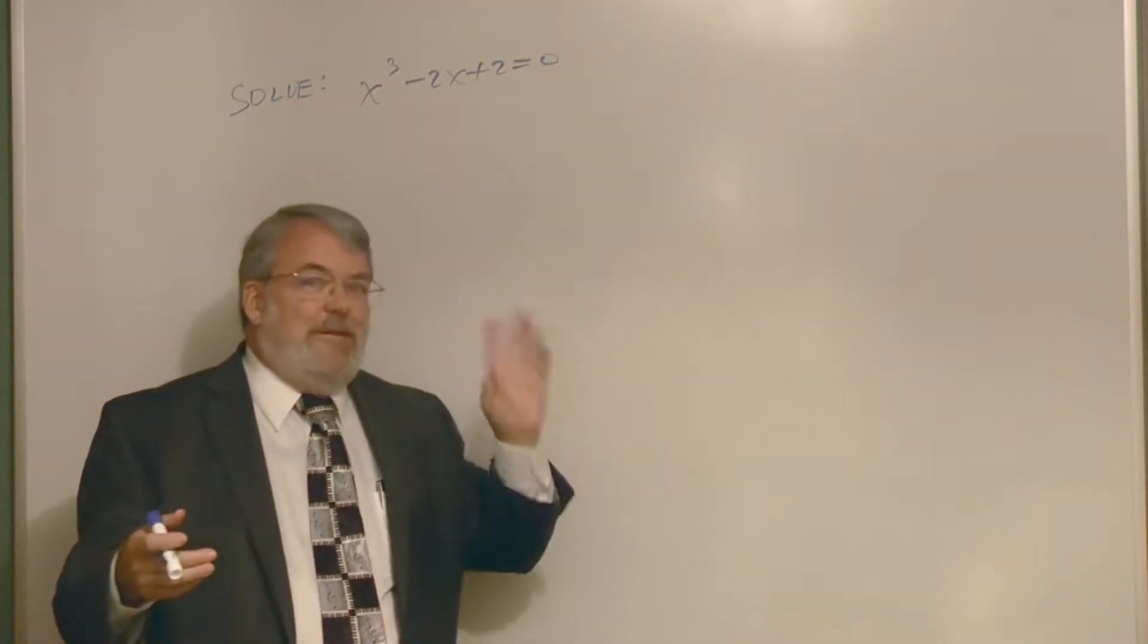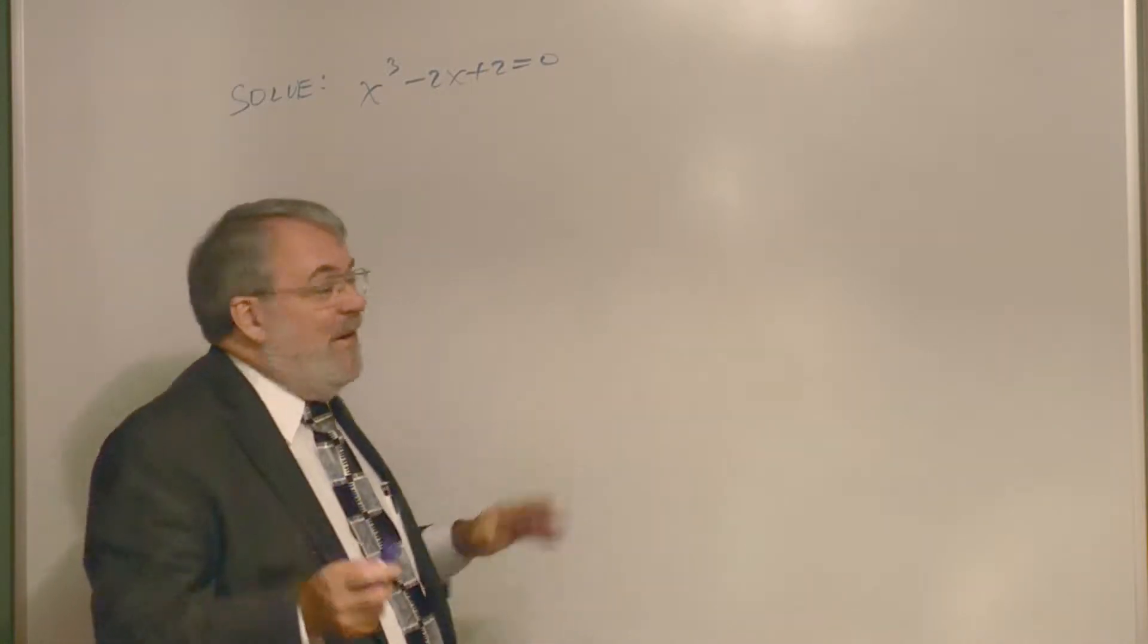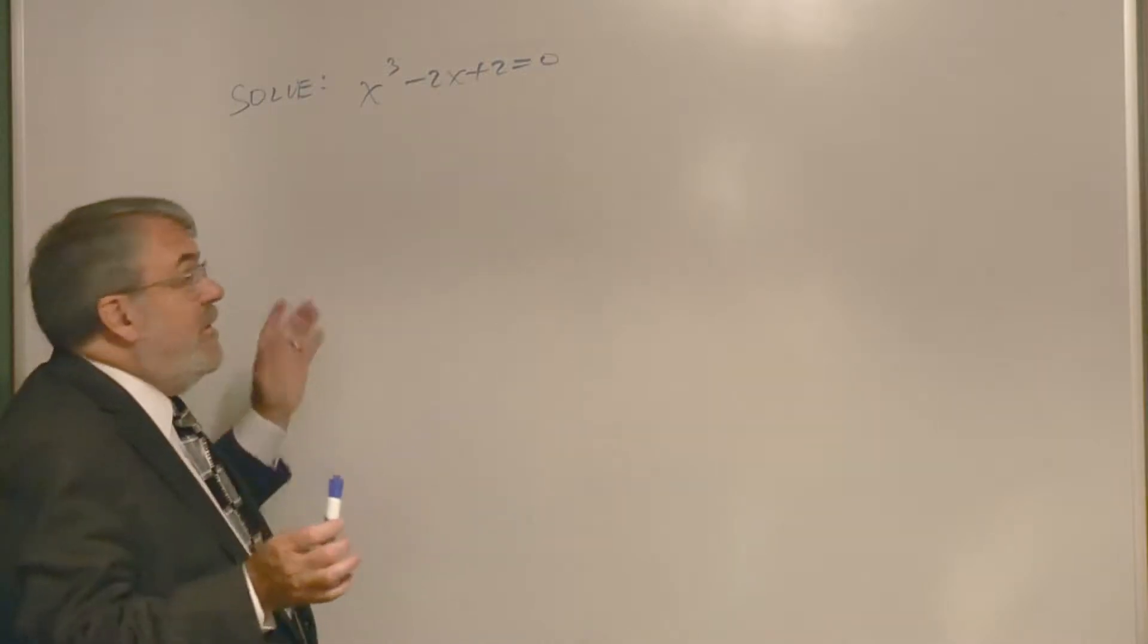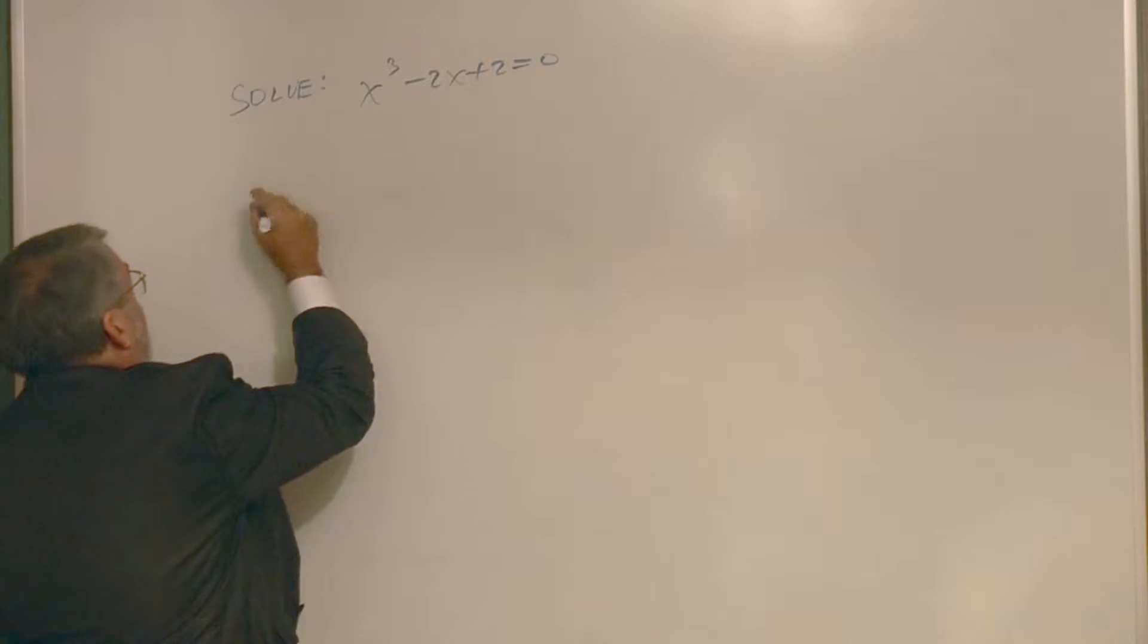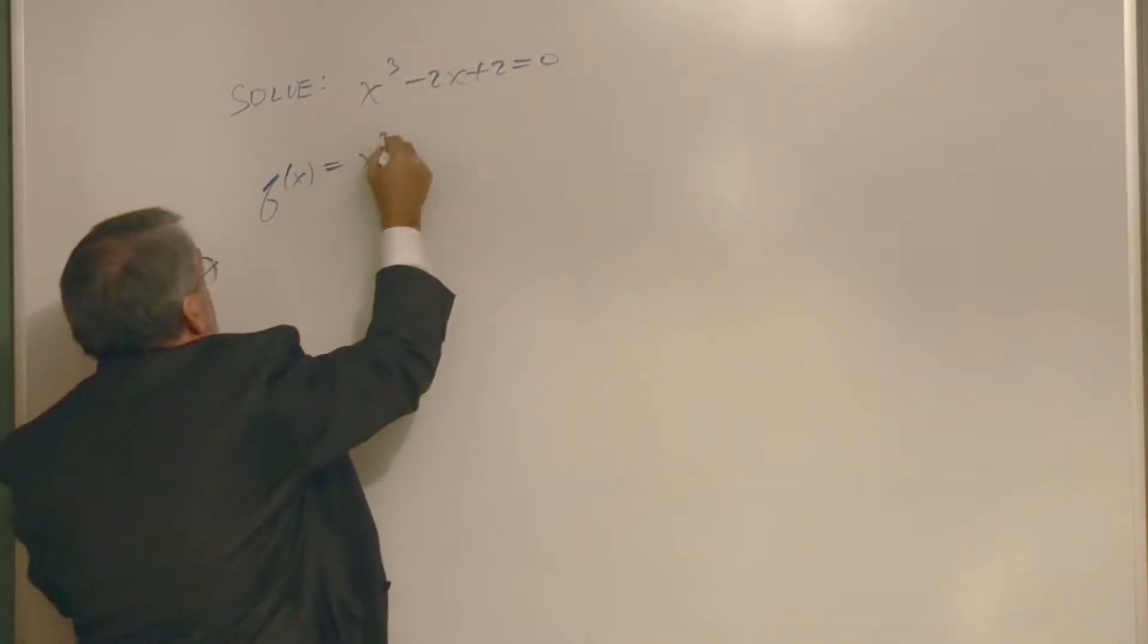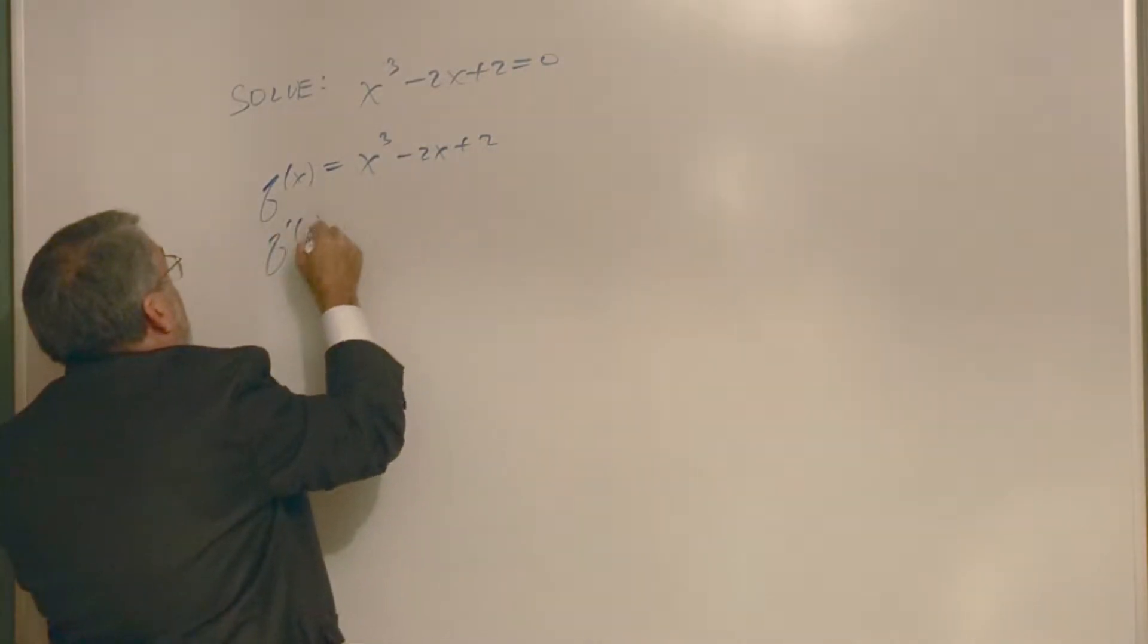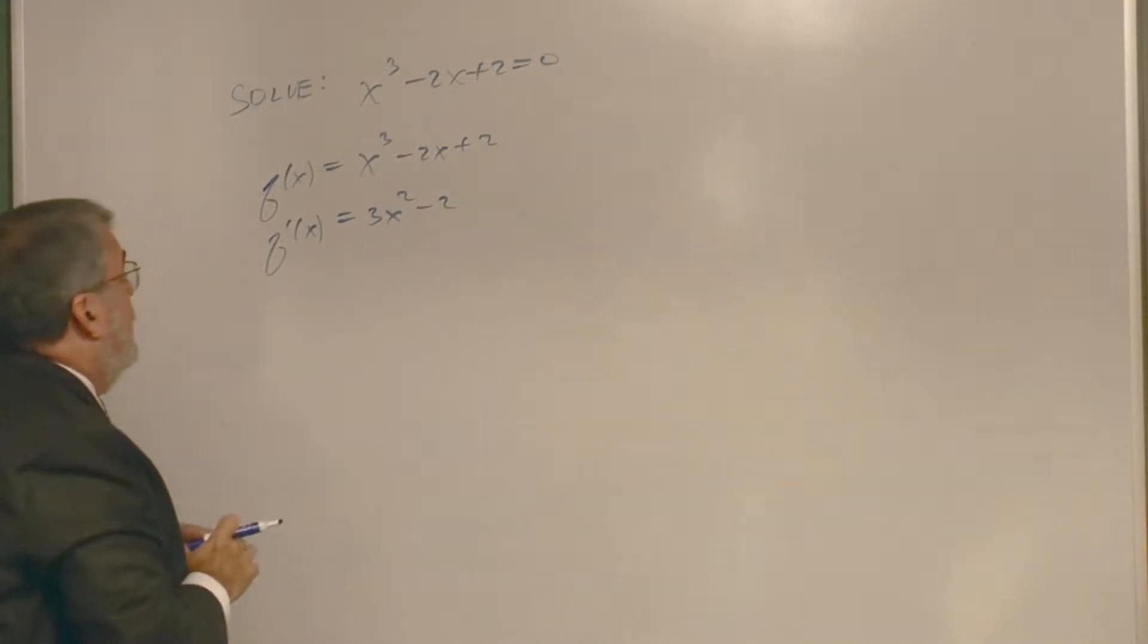It's pretty complicated to solve a third degree polynomial algebraically. It's a mess. I've done it, but let's use Newton's method. Again, I want to set the function equal to 0, so f of x is x cubed minus 2x plus 2. The derivative is 3x squared minus 2.